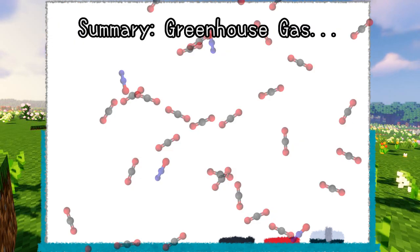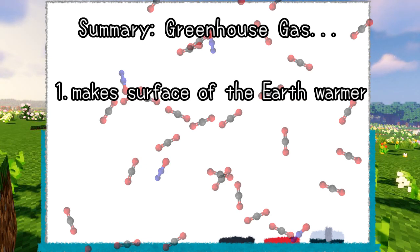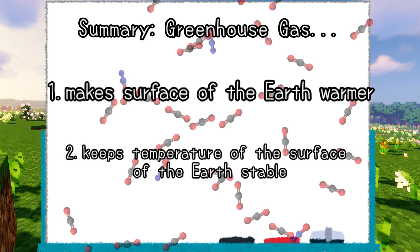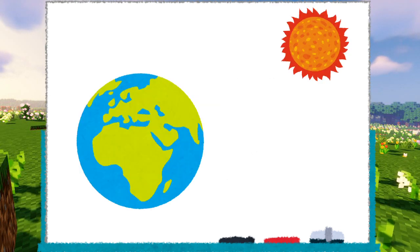In conclusion, greenhouse gas has two effects as follows. It makes the surface of the Earth warmer, and it keeps the temperature of the Earth's surface stable. However, global warming is affecting the intensity of these effects.